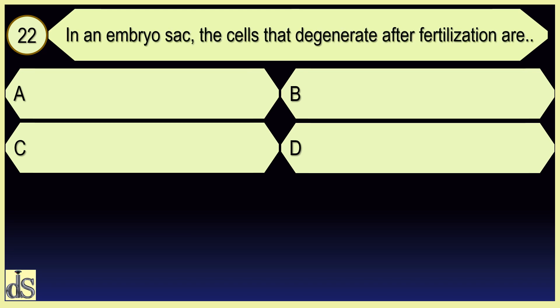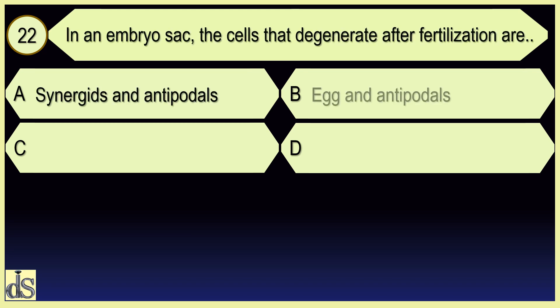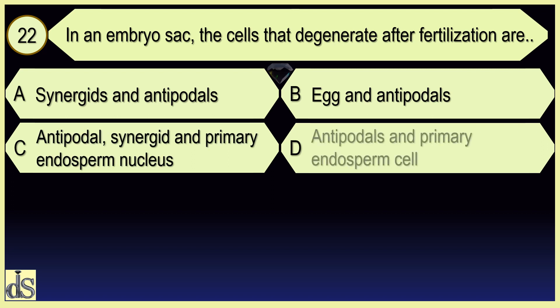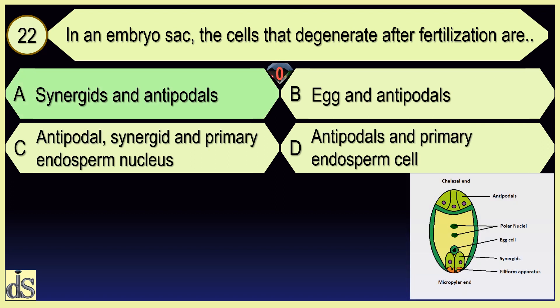In an embryo sac, the cells that degenerate after fertilization are synergids and antipodals.